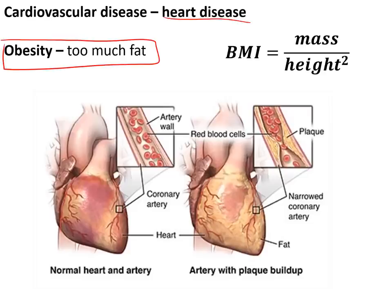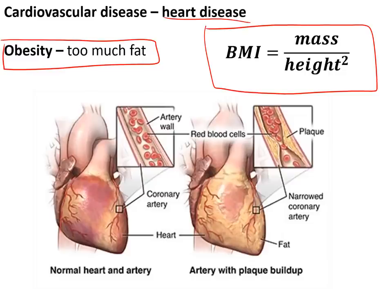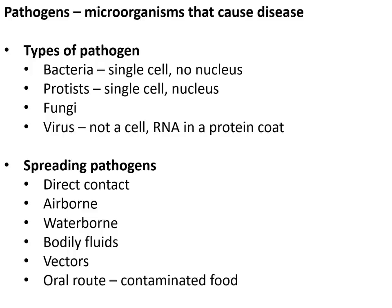In cardiovascular disease, the arteries that supply the heart with blood and nutrients become blocked by a substance called plaque. This can lead to blockages that stop blood from flowing, causing areas of the heart to be starved of oxygen and leading to heart attacks. Pathogens are microorganisms that cause disease — they can be bacteria, protists, fungi, or viruses.